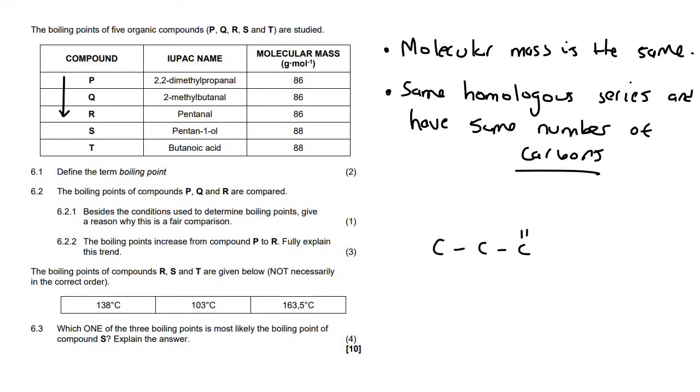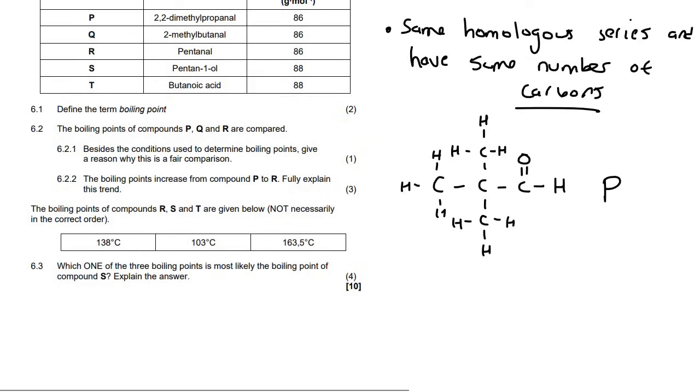So that looks like this. That's an aldehyde. So on carbon number one, it would have a double bond oxygen. And then on carbon number two, there is a methyl group going over here, for example. And then there's another one going down here, because I said that there's two methyls. And then we can put the hydrogens. So this is molecule P.